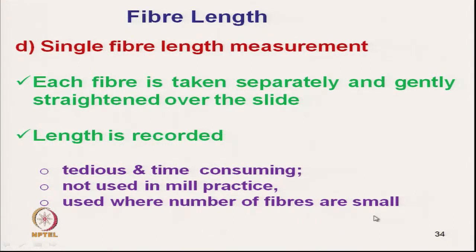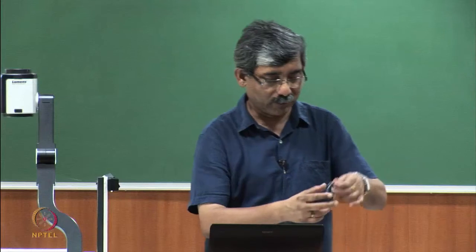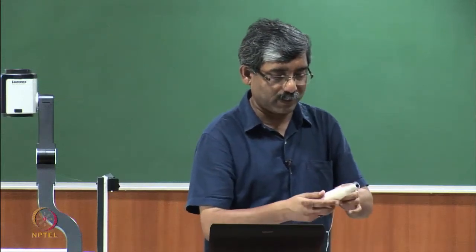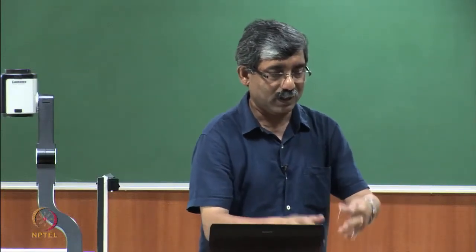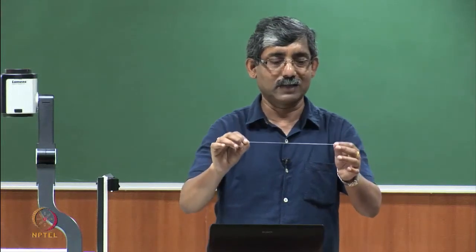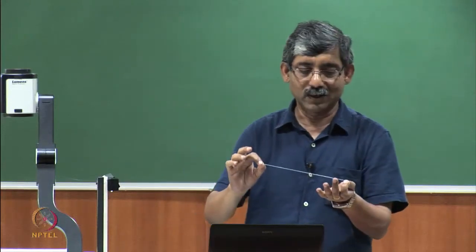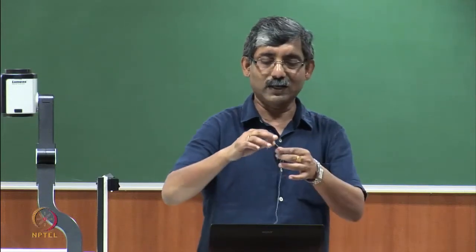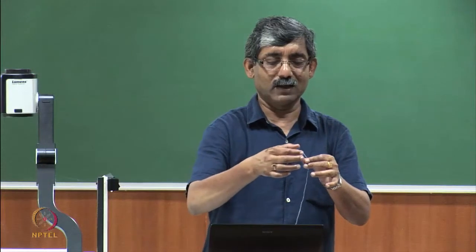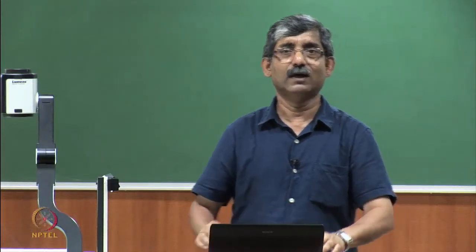This method is used where the number of fibres is small — for example, if we want to measure the average fibre length from a small quantity of yarn. In that case we cannot use the sorter diagram or other principles, but we can take out a few fibres and measure their length to get a rough idea.